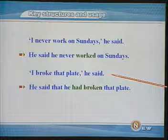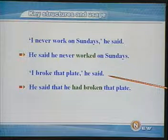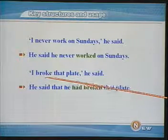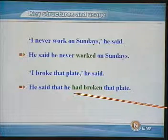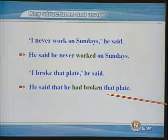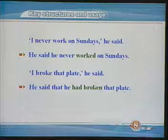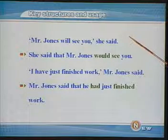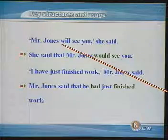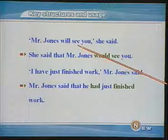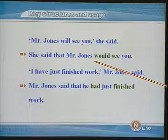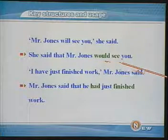下面一句:I broke that plate, he said. 直接引语的部分动词时态是一般过去时,在改为间接引语的时候,这个时态就要变成过去完成时。He said that he had broken that plate. Mr. Jones will see you, she said. 这里直接引语中的动词时态是一般将来时,改为间接引语的时候要变成过去将来时。She said that Mr. Jones would see you.